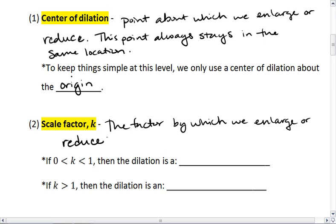If K is between 0 and 1, then your dilation is a reduction. So if we have 1/2 or 1/3, 1/8, 2/5, all these fractions that are smaller than 1 are telling us that our shape is reducing. It's getting smaller. If K is bigger than 1, if it's 1.5, 2, 20, 9 billion, our dilation is an enlargement.